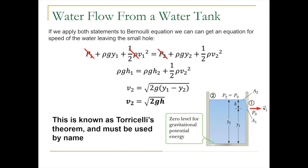And now we get ρgh1 is equal to ρgh2 plus one-half ρv2 squared, where that is the kinetic energy of the water flowing out of the small hole.